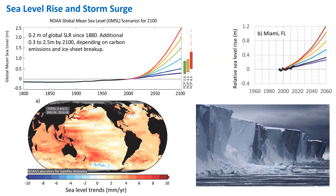Sea level compared to the local land is what matters for coastal populations, and the land itself can be rising or sinking. Along the Gulf Coast there's a real hot spot where relative sea level rise to the land is well above the global mean. Projections for Miami show relative sea level rise of somewhere between 30 more centimeters up to 1.2 meters going forward.